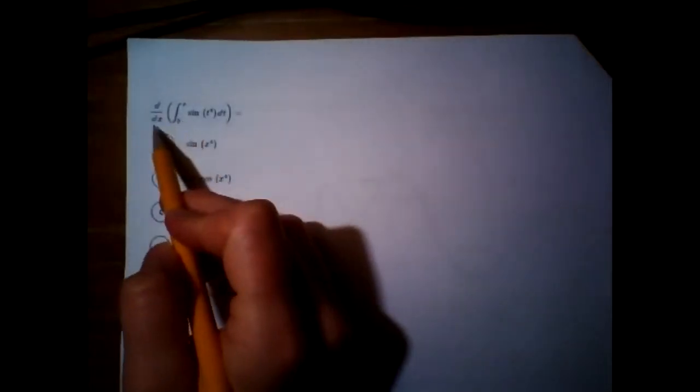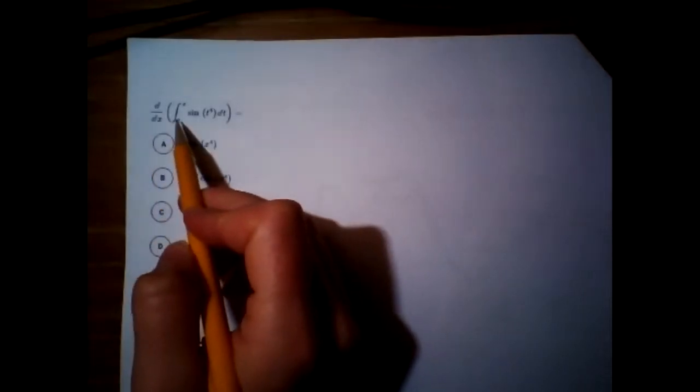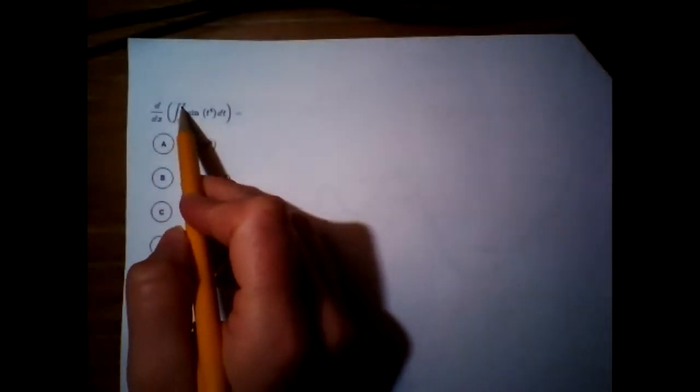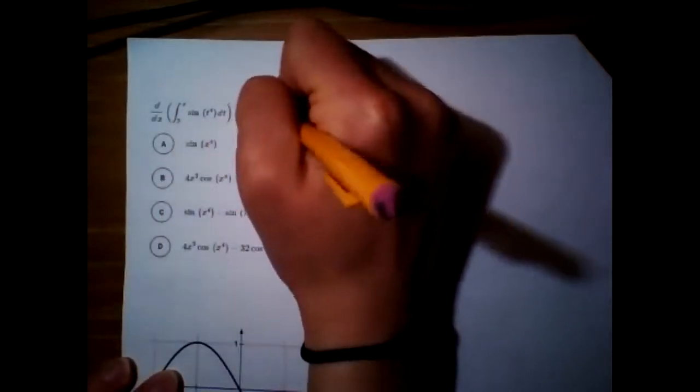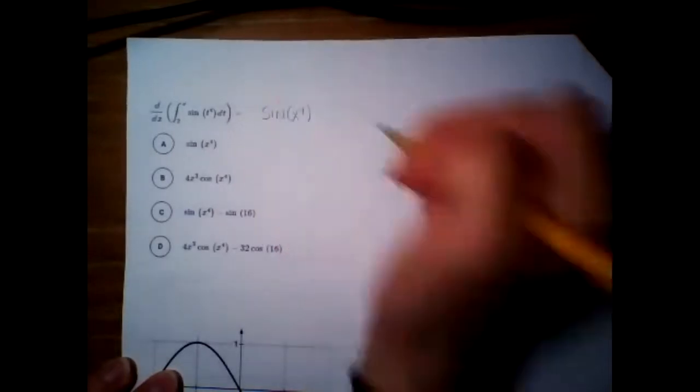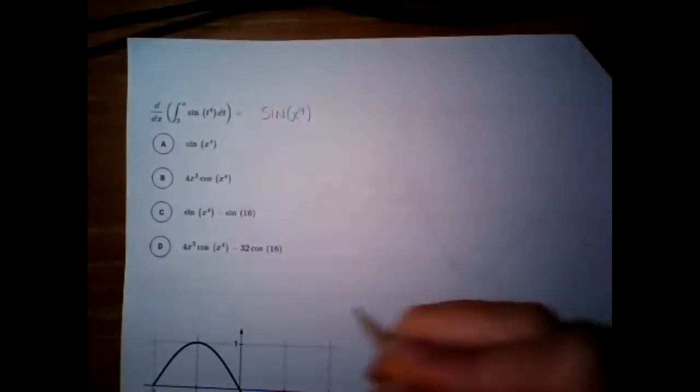So, this first one is derivative of an integral. The derivative and the integral are going to undo each other. All you have to do is plug x into t. There's not even a chain rule because it's just x. So, it would just be sine of x to the fourth. And so, that one is a.